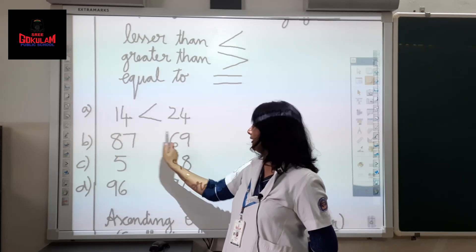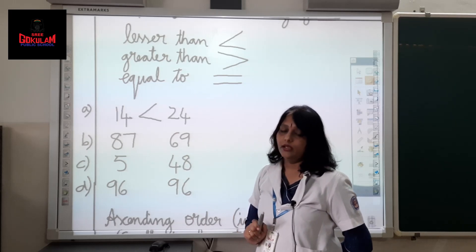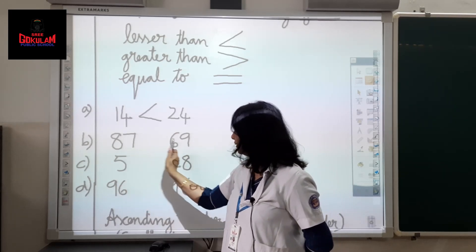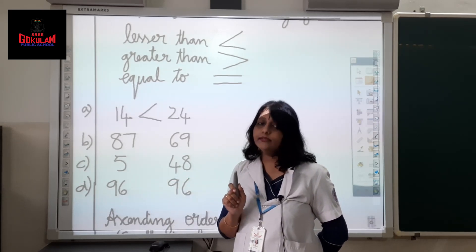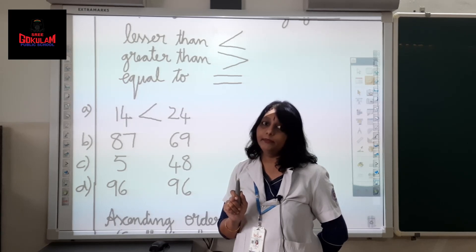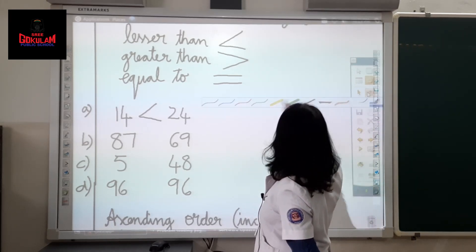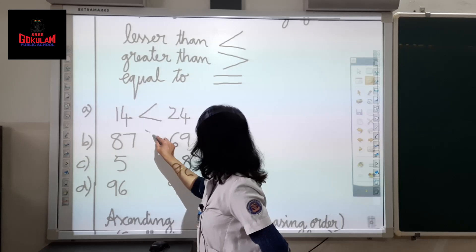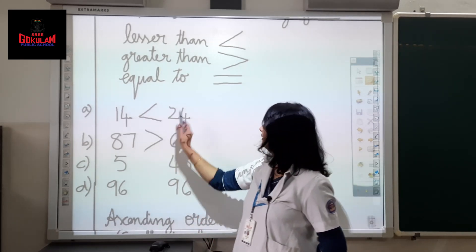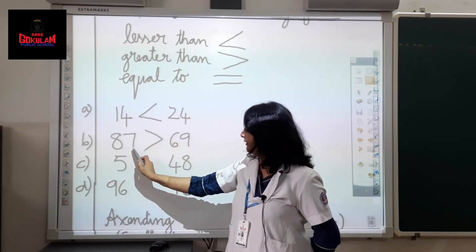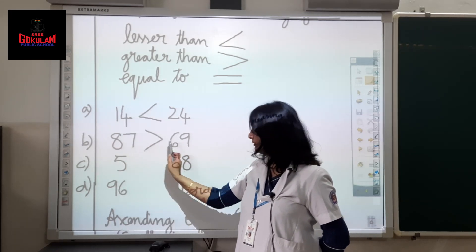Next one: 87 and 69. You have to compare 87 and 69. Which number is greater — 87 or 69? Yes, it is 87. Remember, the open end always faces the big number, the greater number. We read this as: 87 greater than 69.